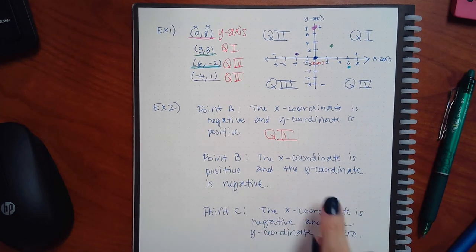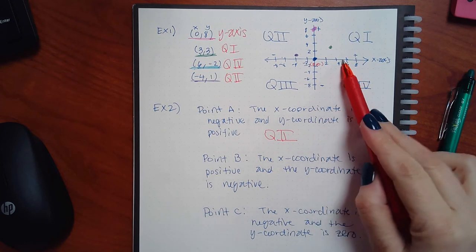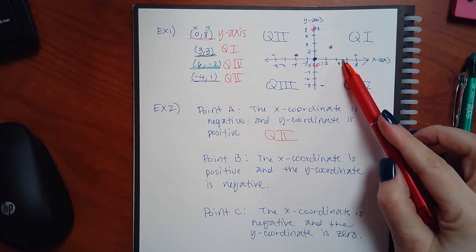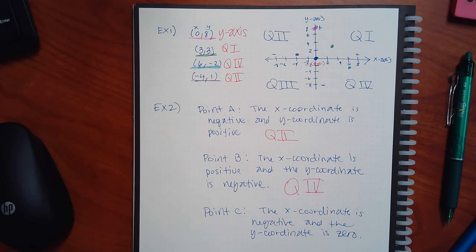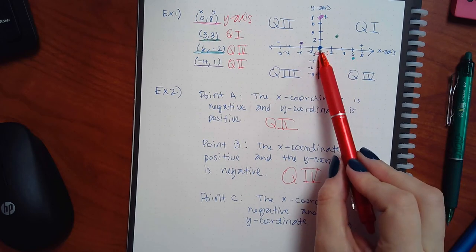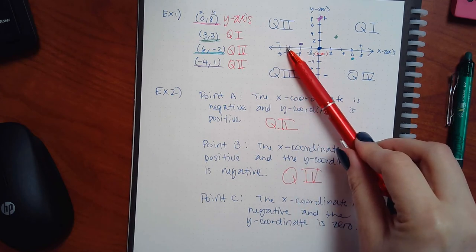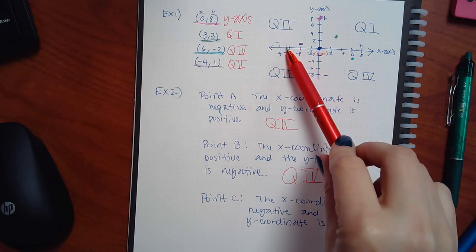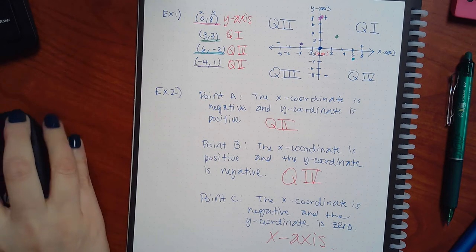For point C, this is a little interesting: x is negative so from the origin I'm moving left. The y coordinate is zero — so that means don't move at all vertically. So where do I land? On the x-axis. You just move over however many you want since they don't give you a specific number, but you can still figure out the location. This one lands on the x-axis.